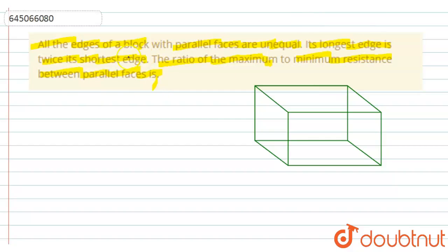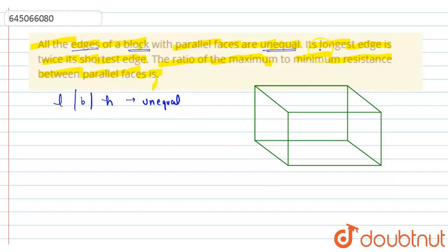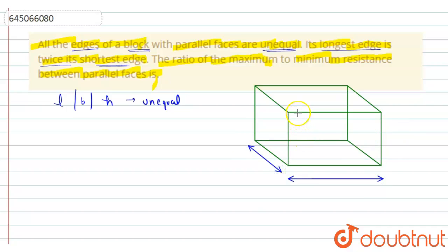We are given a block whose edges are unequal, meaning the length, breadth, and height of this block are all unequal. The longest edge is twice its shortest edge and we have to find the ratio of maximum to minimum resistance between parallel faces. Let's say this is the length, this is the breadth, and this is the height of the block.